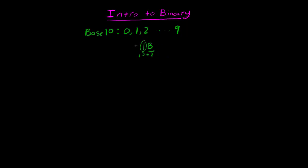As you move further left, if there is another digit it would actually be worth 100 times whatever the digit is. So if there is a 2 there, that's worth 200, and then you add that to the rest to get 218. It's easy to overlook these simple things because we do it automatically. So let's break this down into more of a mathematical formula.